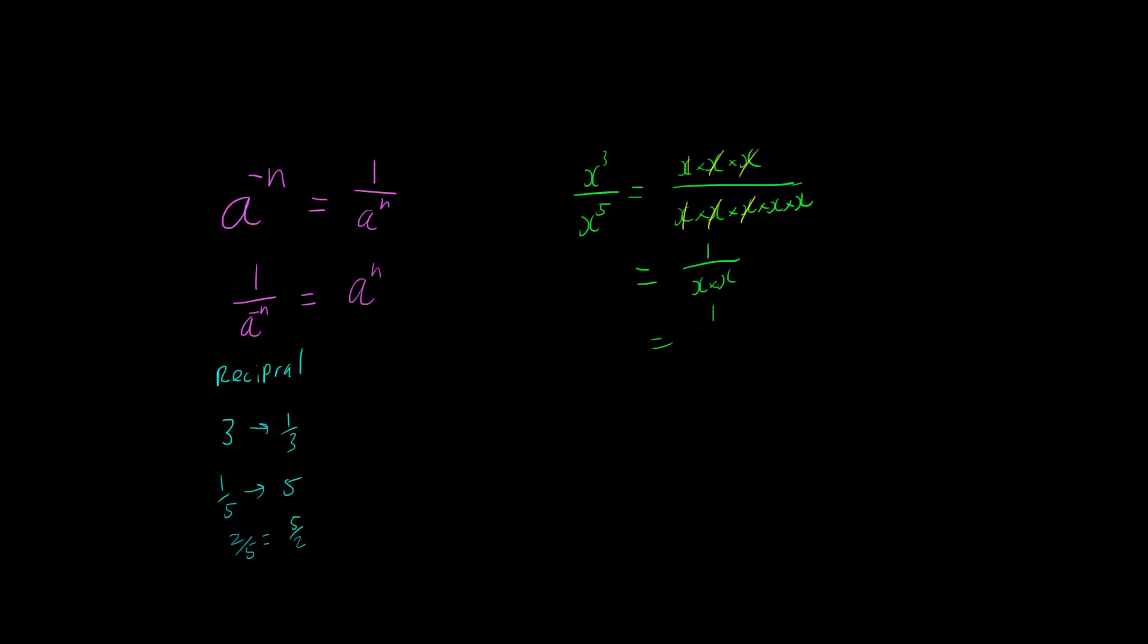Now if we have a look at the second index law with this situation, where we have x cubed over x to the 5, the second index law states that we would subtract the powers. So we would have x to the 3 minus 5, which is x to the power of negative 2.